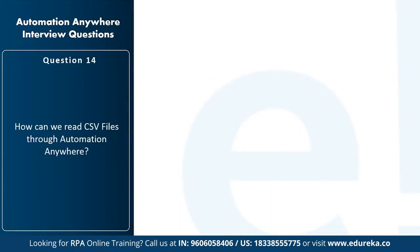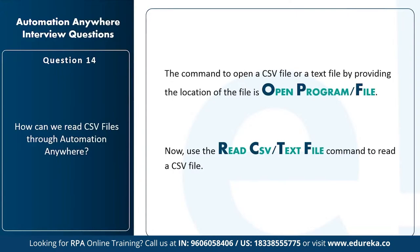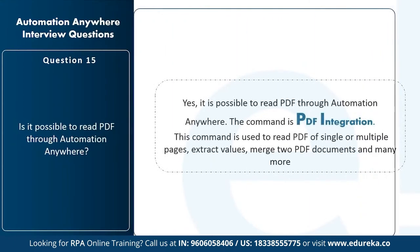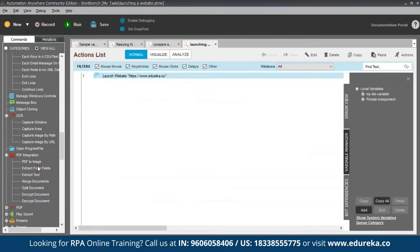The next question is: how can we read CSV files in Automation Anywhere? To open a CSV file or text file, provide the file location in the 'open file' activity, then use the 'read CSV file' or 'text file' command to read it. The next question is: is it possible to read PDFs through Automation Anywhere? Yes — the PDF integration command is used to read PDFs of single or multiple pages, extract values, merge documents, and more. Commands under PDF integration include: PDF to image, extract form fields, extract text, merge documents, split document, encrypt document, and decrypt document.